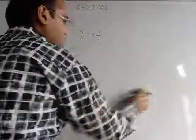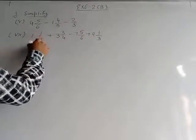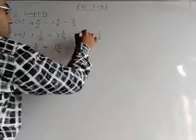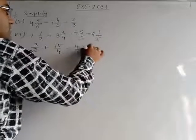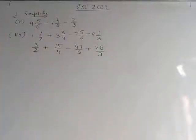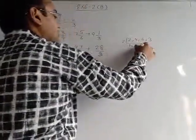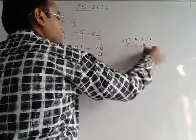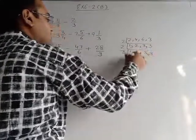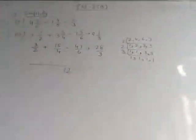Now part number 7. First of all we will convert the mixed fractions: 2 and 1/2 = 3/2; 3 and 3/4 = 15/4; 6 and 5/6 = 47/6; 9 and 1/3 = 28/3. Now in the next step we have to find the LCM of 2, 4, 6, and 3. Dividing by 2: 1, 2, 3, 3. Again by 2: 1, 1, 3, 3. Now by 3: both 3s give 1. LCM is 2×2×3 = 12.